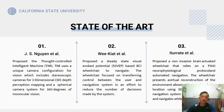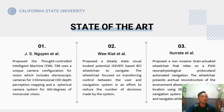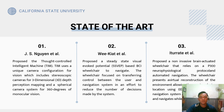In the state of the art, GS Nguyen proposed to control an intelligent machine called TEAM. TEAM uses a unique camera configuration for vision, including a stereoscopic camera for 3D depth perception mapping and a spatial camera system for 360-degree monocular vision. From WIQIAT, a steady-state visual evoked potential-based BCI wheelchair was proposed to navigate, focusing on transferring control between the user and the navigation system to reduce the number of decisions made by the system.